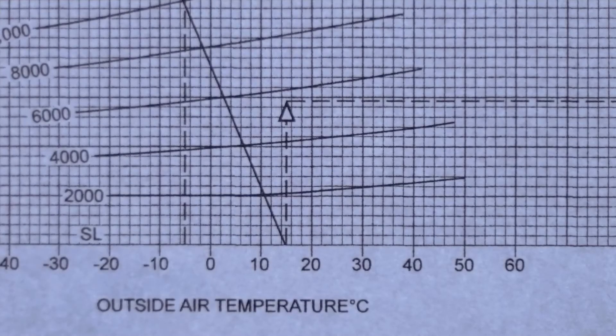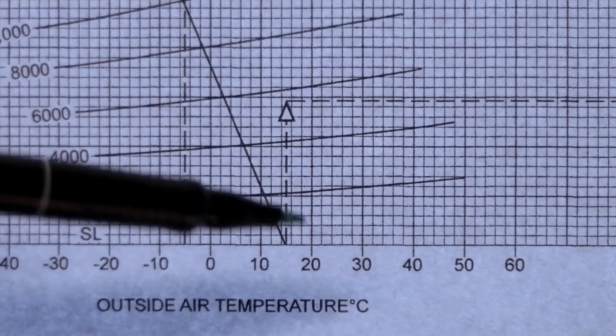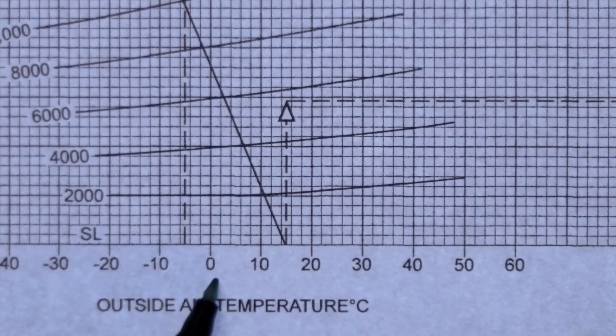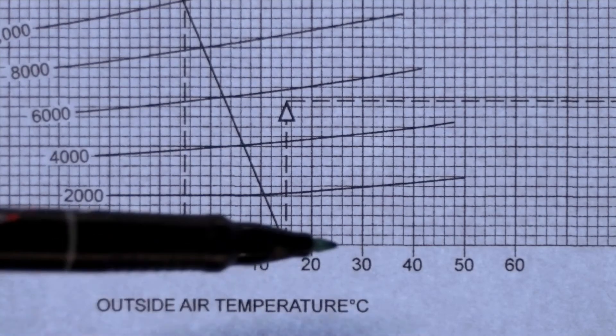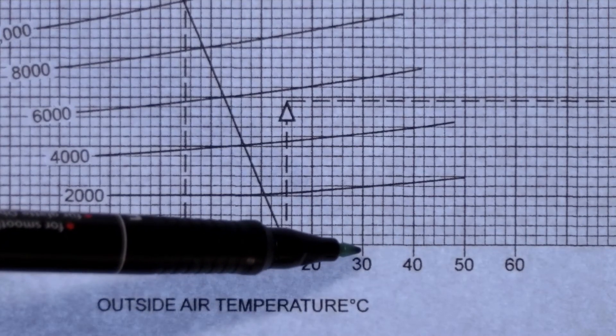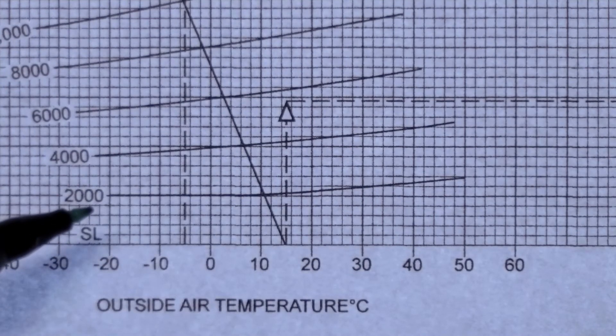We enter the chart from the scale that says outside air temperature and we know at 2,000 feet our outside air temperature is 30 degrees Celsius. And that is positive 30 degrees Celsius so I am going to plot the line 30 all the way to meet 2,000 feet.